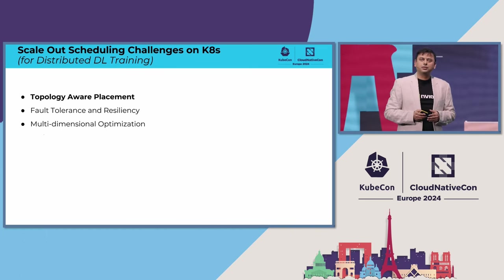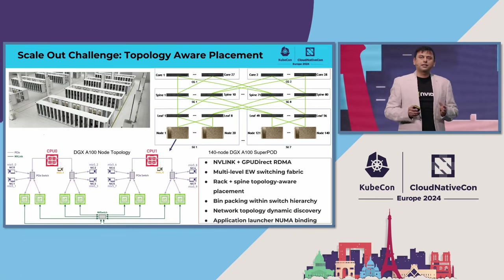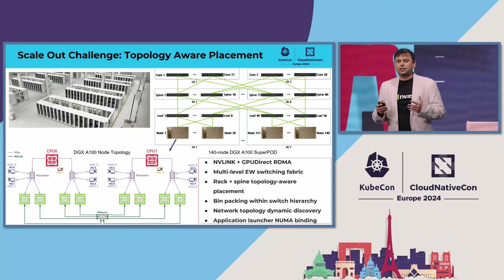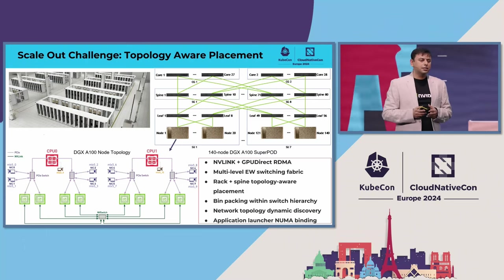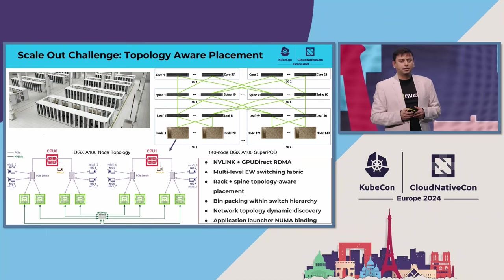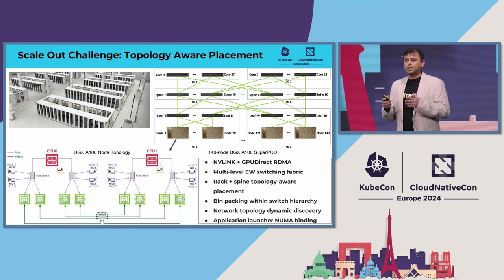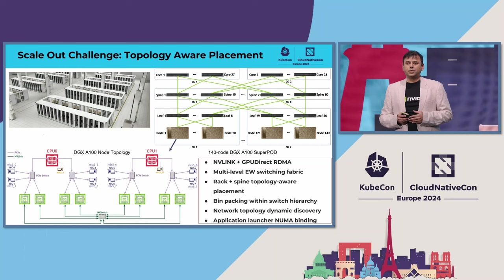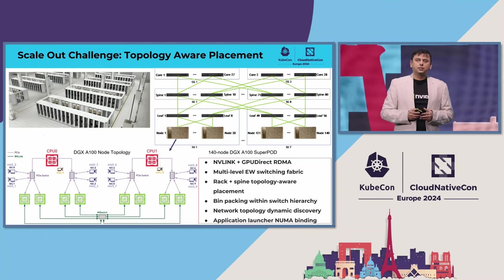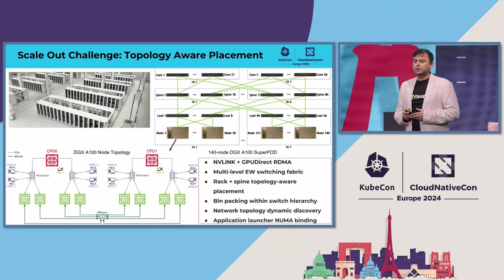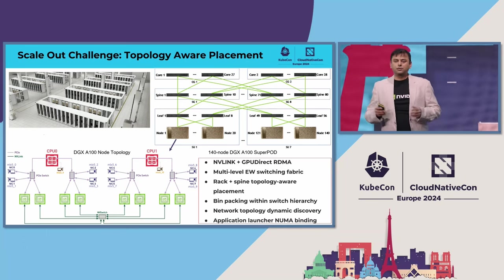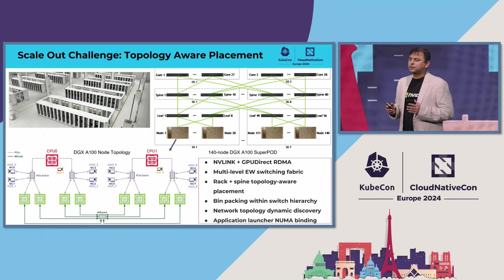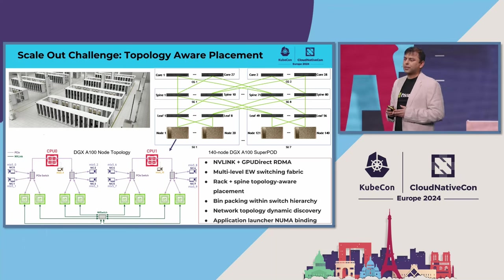First, let's look into the challenges with topology-aware placement. To satisfy the massive compute demands of generative AI, scale-out clusters need to interconnect thousands of GPUs. Inside the DGX node — for example, the DGX A100 node — there are eight GPUs, and they can all directly communicate with each other using NVLink. However, beyond the NVLink domain, multi-level rack and spine switching units with GPU-direct RDMA support can scale out these clusters with hundreds and thousands of DGX nodes. So to schedule multi-node jobs, we have to be aware of two topology-aware constraints.